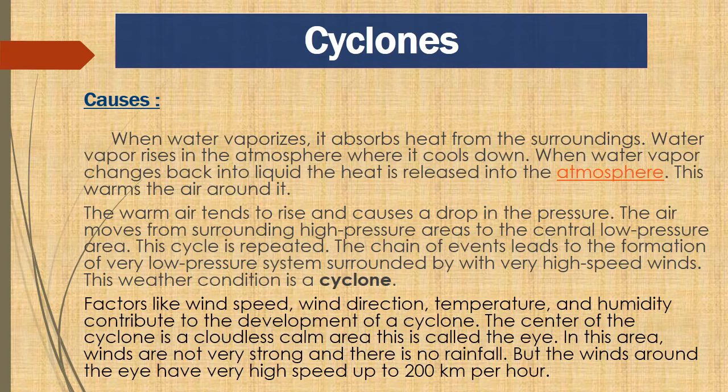When a low air pressure area is created, the center of the cyclone becomes a cloudless, calm area with no rain — this is called the eye. The surrounding area around the eye has very high-speed air that can reach up to 200 km per hour.